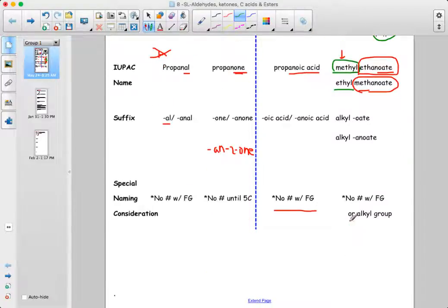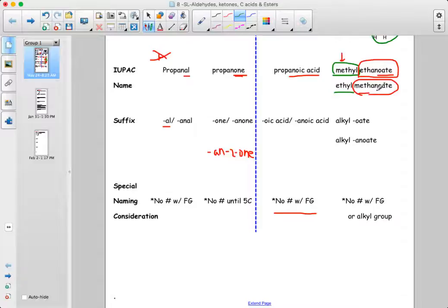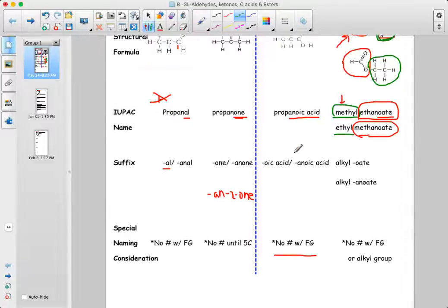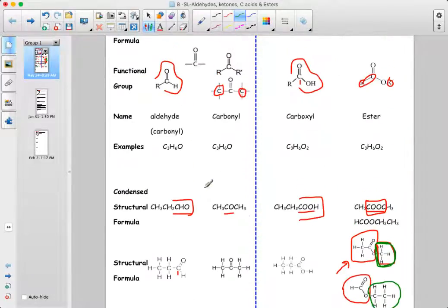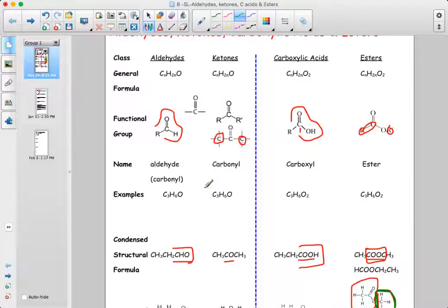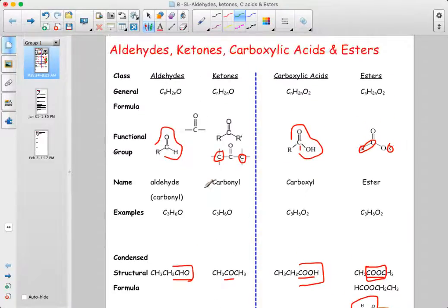So you don't have to number the functional group in an ester either. It's kind of too challenging to name. So instead, you just give the length of both carbon chains that are involved. The rest of this handout has some practice stuff that we'll look at in class. But for now, that covers four new classes of organic compounds.